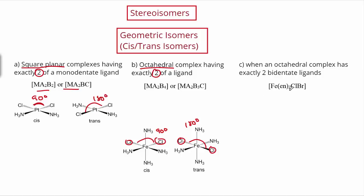The last example of geometric isomers involves having exactly two of a bidentate ligand, like ethylenediamine, in an octahedral complex. With two bidentate ligands bound, two positions remain for two monodentate ligands. Those two monodentate ligands — whether identical or different — can be either 90 degrees apart or 180 degrees apart, which again gives us the options of cis or trans.